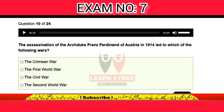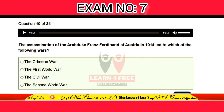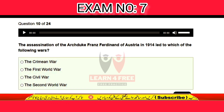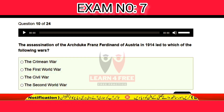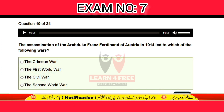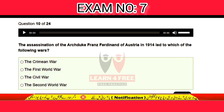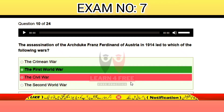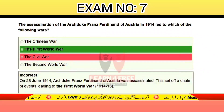Question number ten: the assassination of the Archduke Franz Ferdinand of Austria in 1914 led to which of the following wars? The Crimean War, the First World War, the Civil War, or the Second World War? The correct answer is B: the First World War.